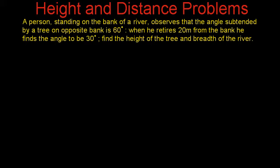We have our first problem. The problem statement says: a person standing on the bank of a river observes that the angle subtended by a tree on the opposite bank is 60 degrees. When he retires 20 meters from the bank, he finds the angle to be 30 degrees. Find the height of the tree and the breadth of the river.